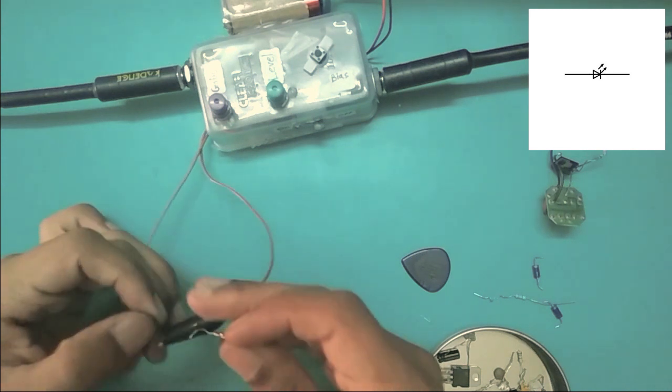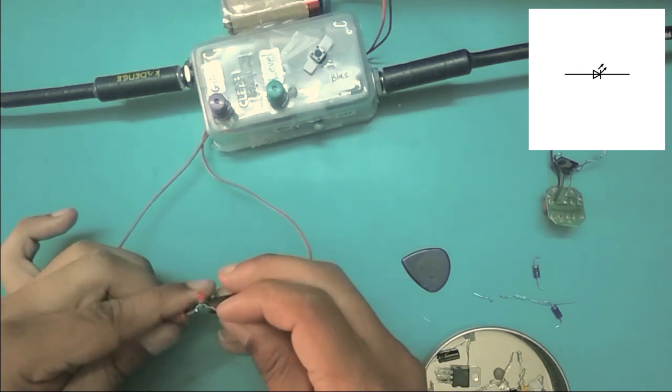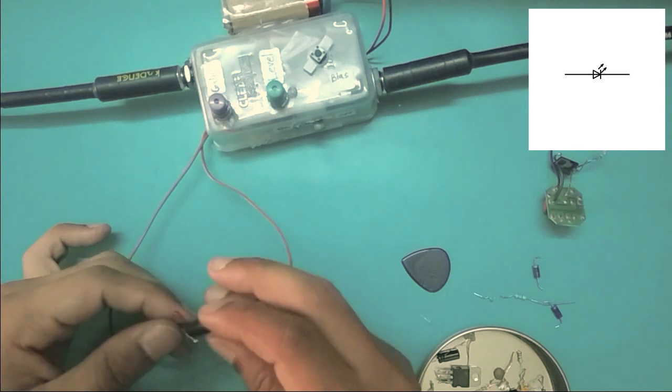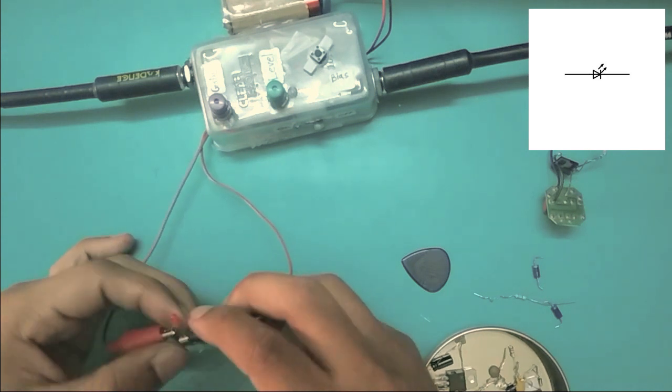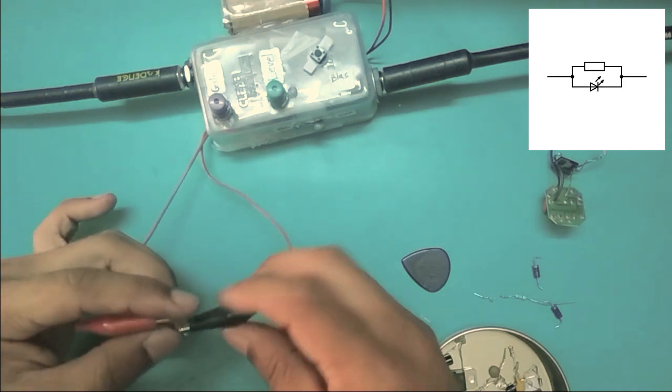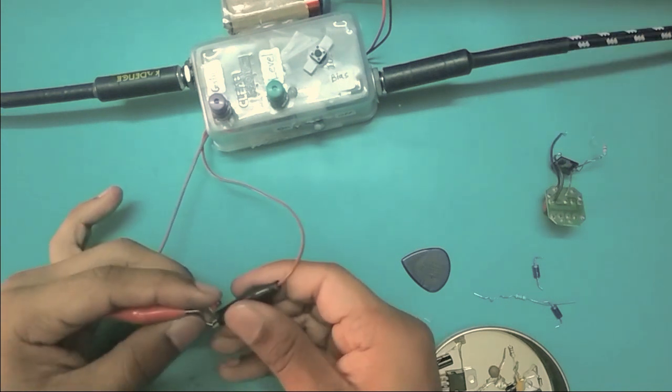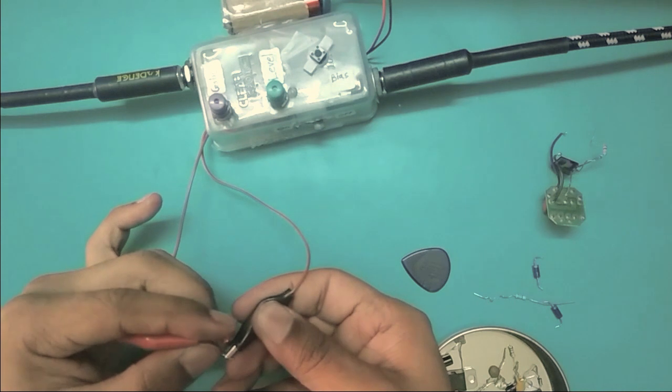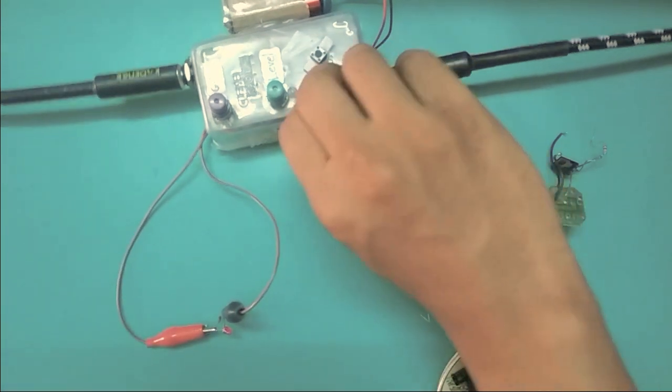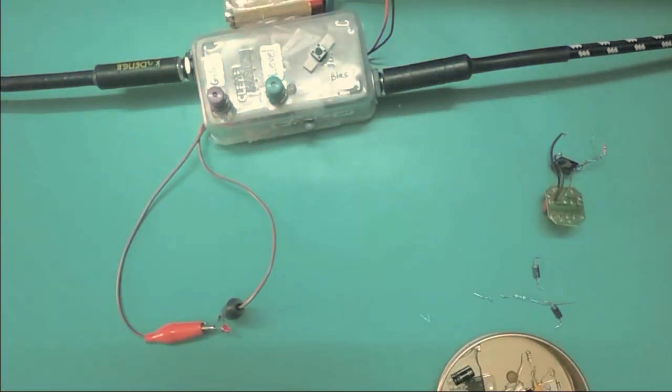Now I'm just connecting the resistor in parallel with this LED again. Another sort of fuzzy distortion.